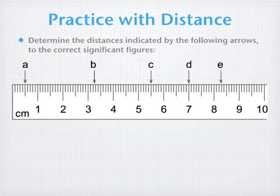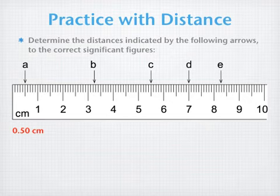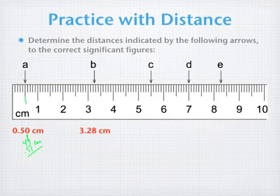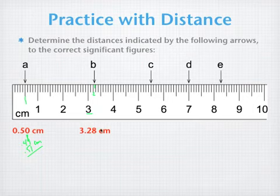I'm going to pause the video now — make your estimates, and we'll come back. Alright, so we're back. Here is the first reading: 0.50 centimeters for A. That trailing zero tells me that I think the marking is right on 0.5 — not a little to the right or left. Reasonable estimates would be 0.49 to 0.51 centimeters. For B, I'm saying 3.28 centimeters. I know the 3 for certain, I know the 0.2 for certain, and I estimate 3.28 in between. Anywhere from 3.27 to 3.29 is a very reasonable estimate.